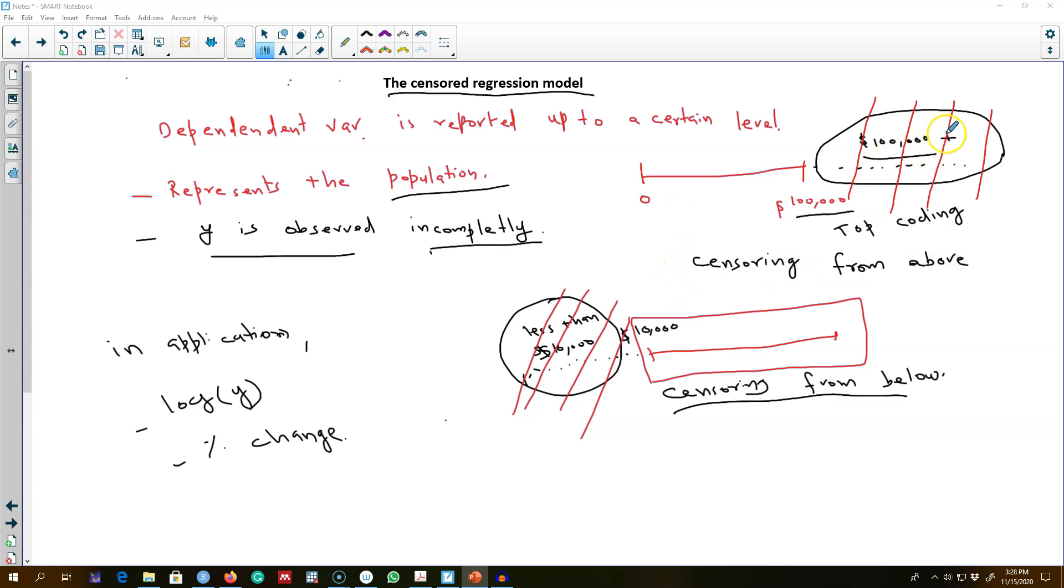In the censored regression model, we do observe this part of the population. We pick sample from this part of the population, but we have incomplete information about the part of sample which is picked up from this part of the population.